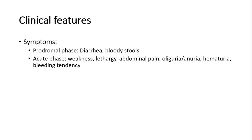The clinical features can be divided into the prodromal phase and the acute phase, which occurs seven to ten days later. In the prodromal phase, the child may have diarrhea or even bloody stools due to enterocolitis.